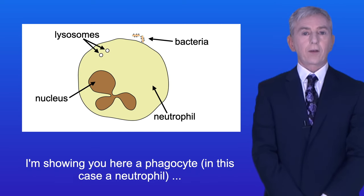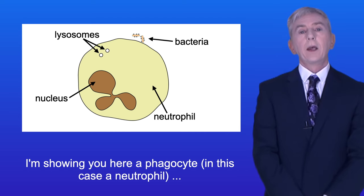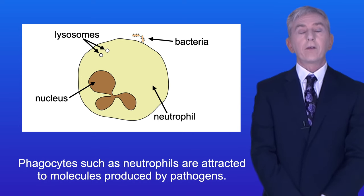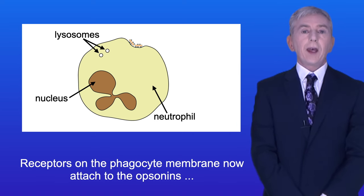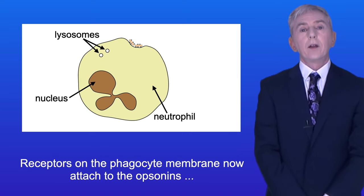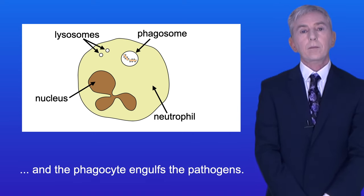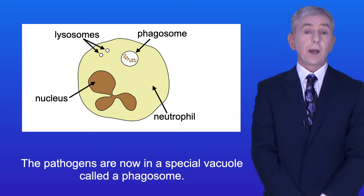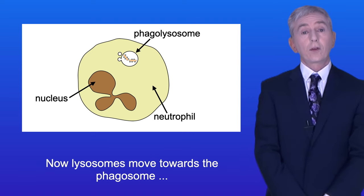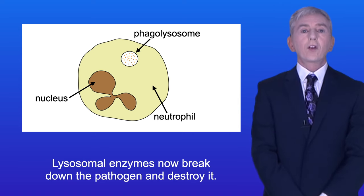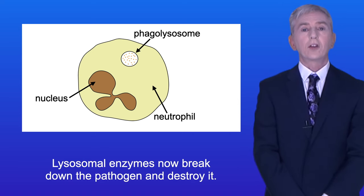Here is a phagocyte — in this case a neutrophil — and some bacteria which are tagged with opsonins. Phagocytes such as neutrophils are attracted to molecules produced by pathogens. Receptors on the phagocyte membrane attach to the opsonins and the phagocyte engulfs the pathogens. The pathogens are now in a special vacuole called a phagosome. Lysosomes move towards the phagosome and fuse with it forming a phagolysosome. Lysosomal enzymes then break down the pathogen and destroy it.